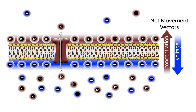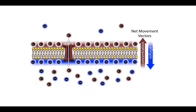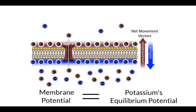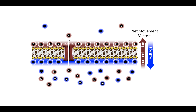So what would the membrane potential actually be for this cell? It depends on the potassium concentration gradient. The stronger the concentration gradient, the greater the voltage gradient that would have to develop to oppose the movement of potassium down that concentration gradient. In other words, the membrane potential of the cell will be the equilibrium potential for potassium.